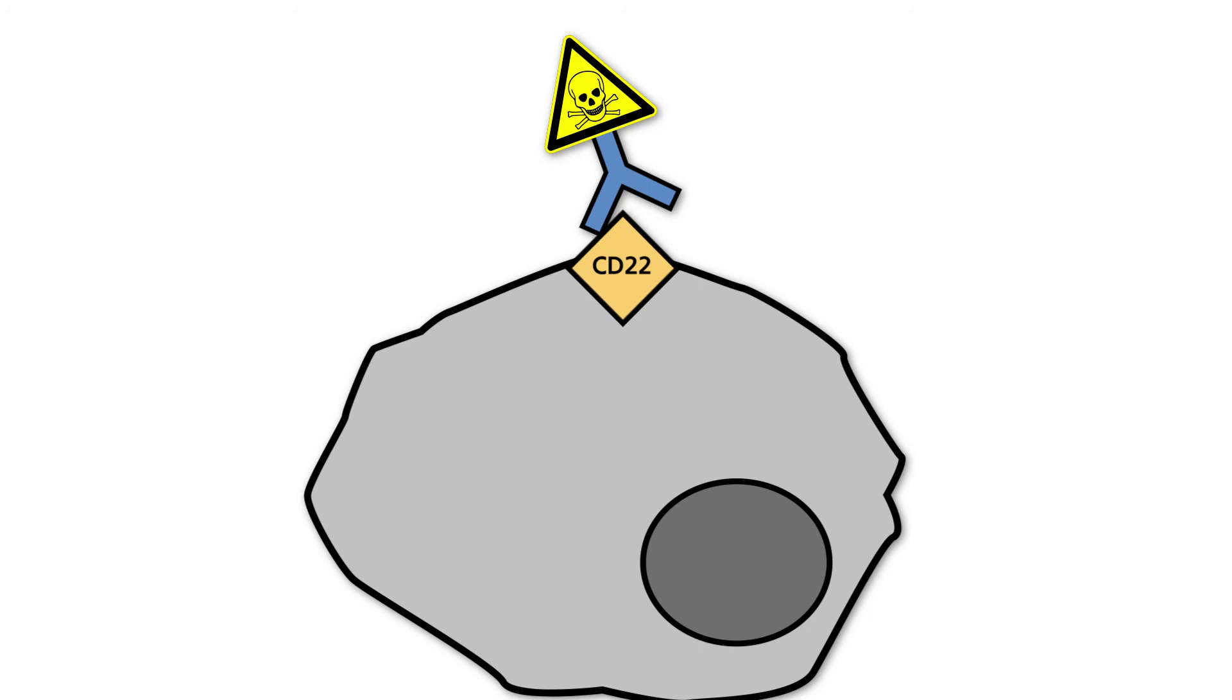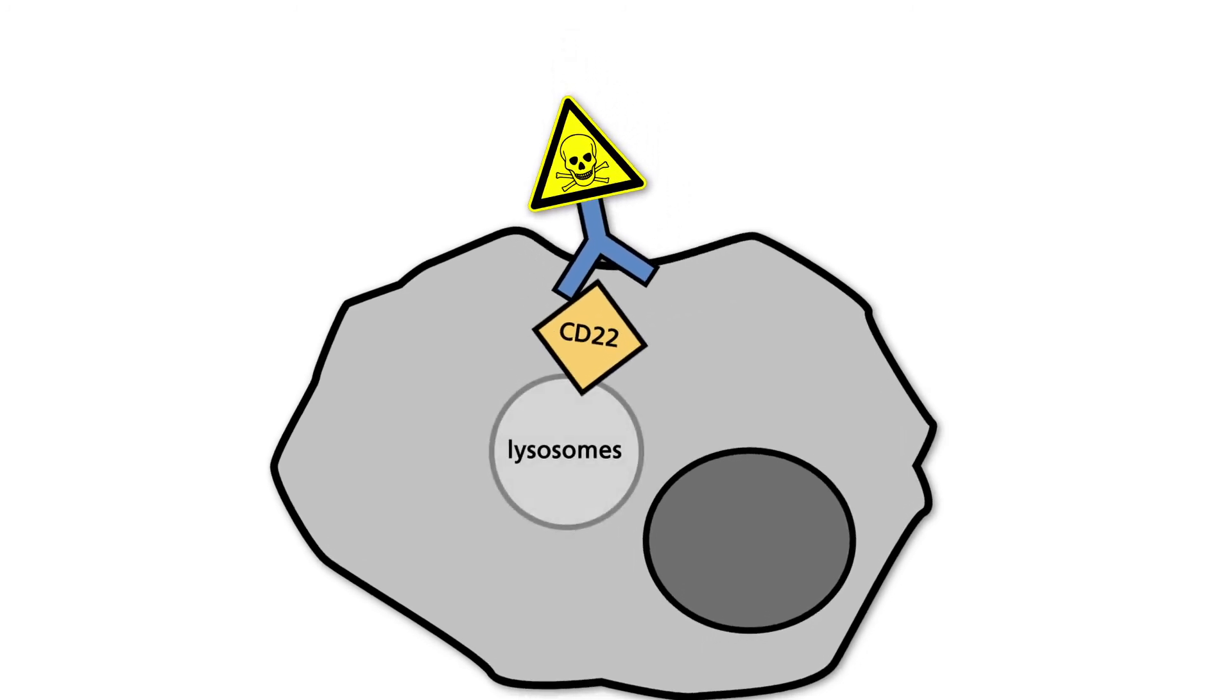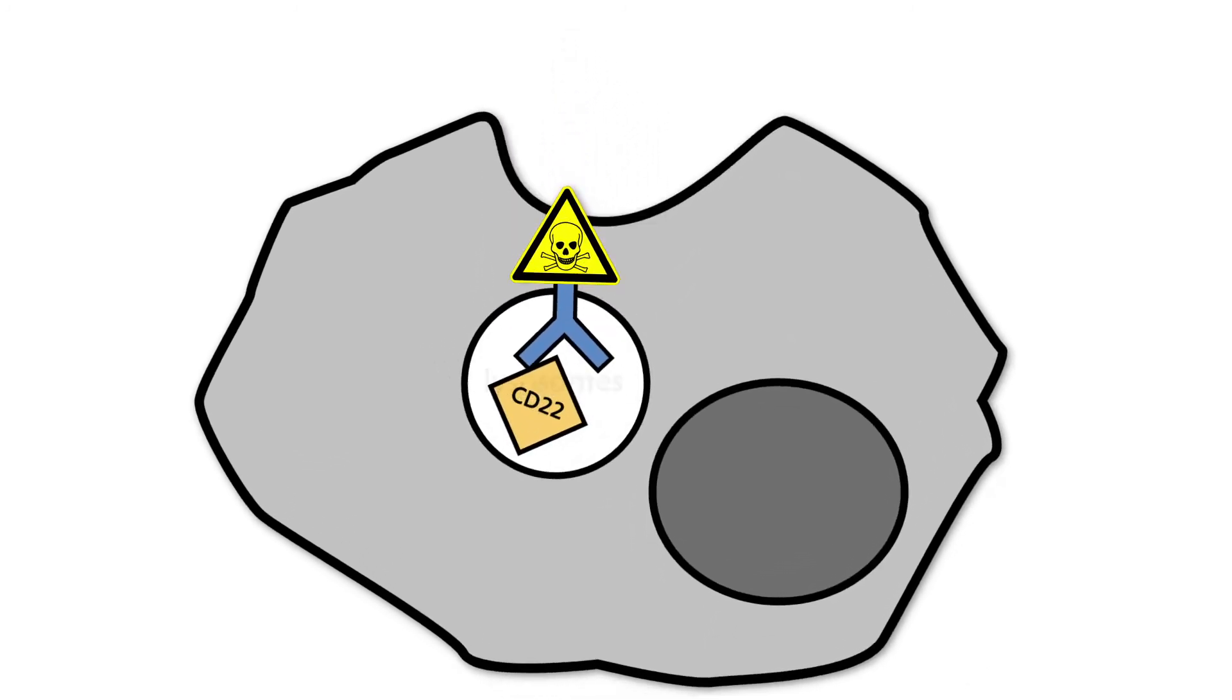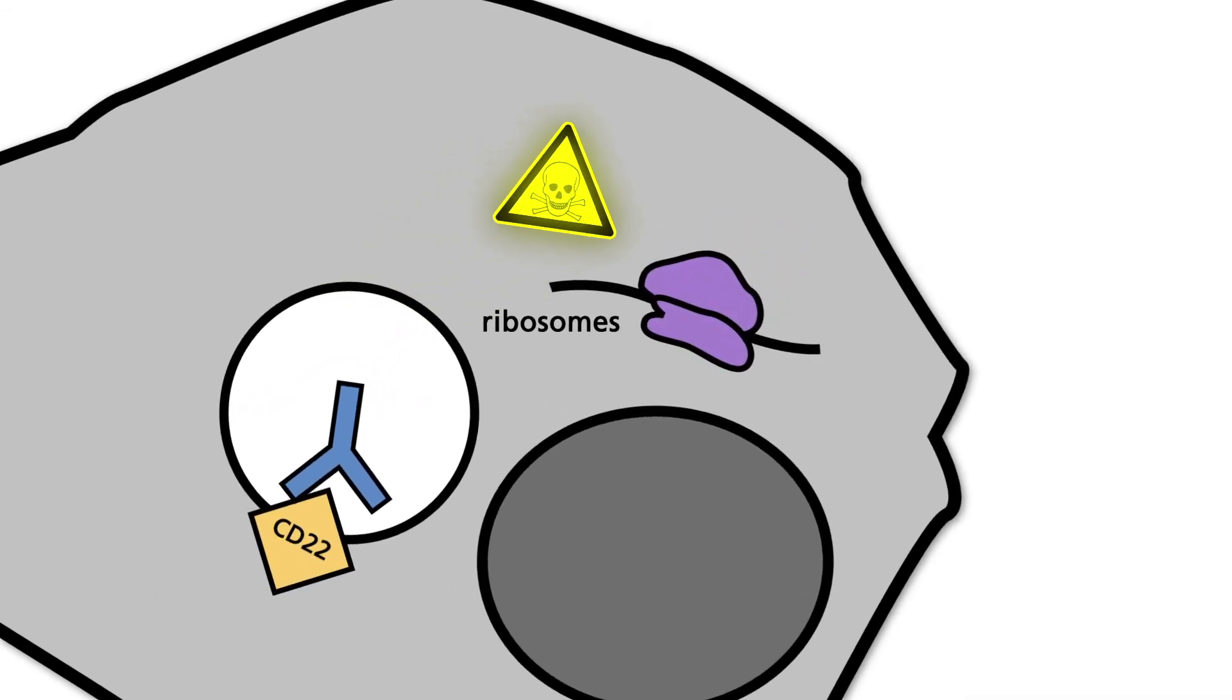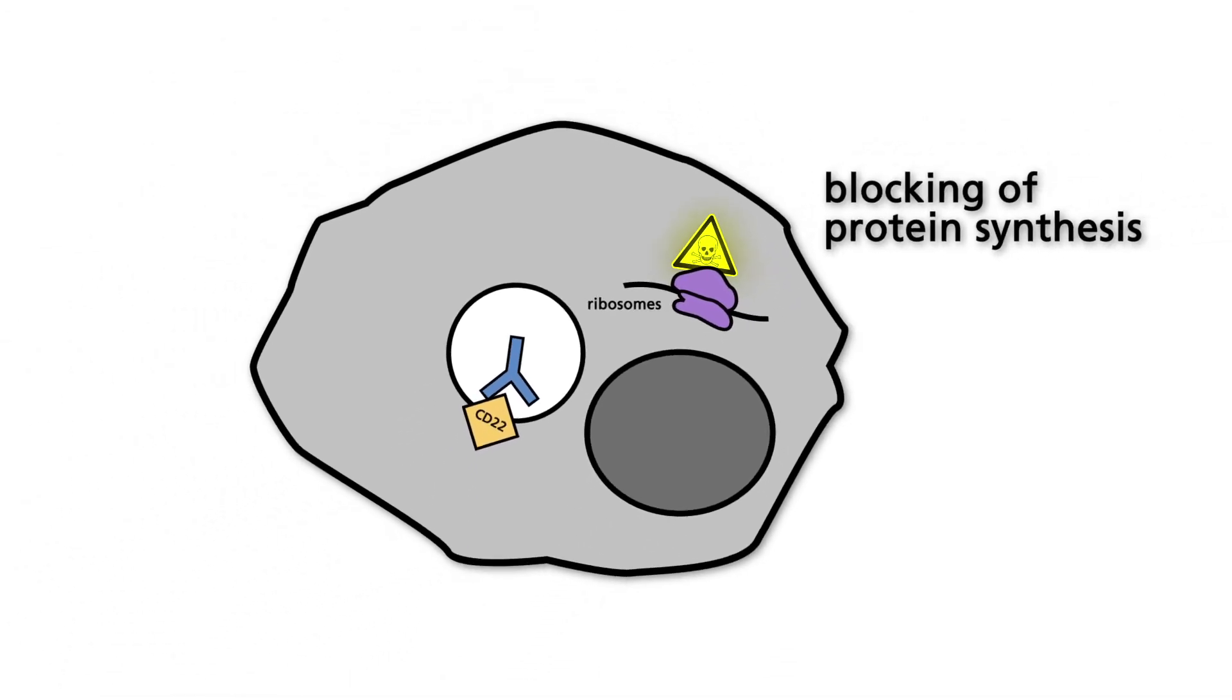After binding, the receptor antibody complex is endocytosed and directed to lysosomes in the cell. The low pH in the lysosome activates the toxin. The activated toxin binds to ribosomes and blocks protein synthesis. This irreversible block leads to cell death.